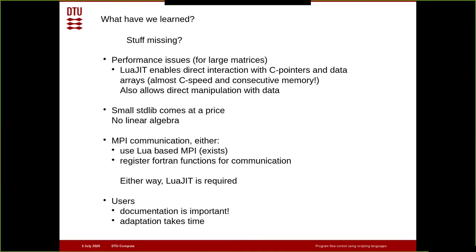There are still things missing in this implementation, particularly performance issues. With very large matrices it becomes cumbersome because you need to copy data back and forth. LuaJIT can solve some of these problems — it allows direct data manipulation and is much faster. The small standard library of Lua comes at a price: there are no basic linear algebra suites, and those that exist are not maintained and are several years old. On the MPI side, each MPI processor creates its own Lua instance, which is somewhat problematic; a Lua-based MPI binding, which does exist, is probably better.